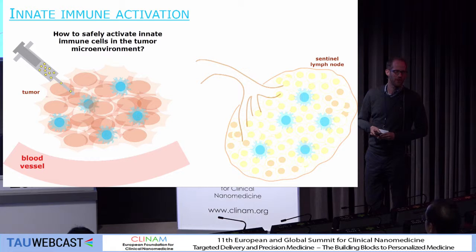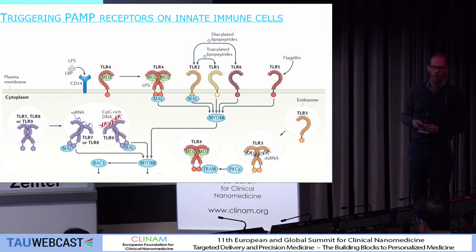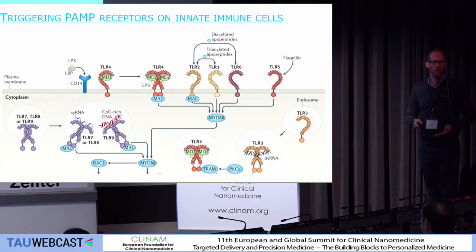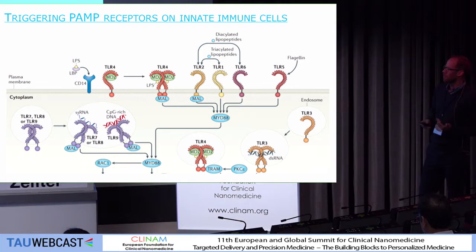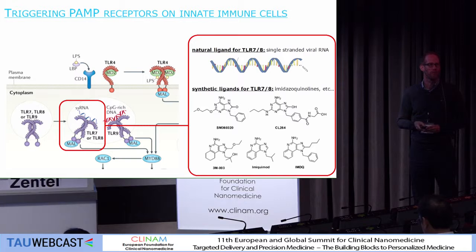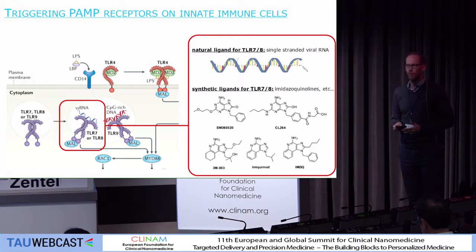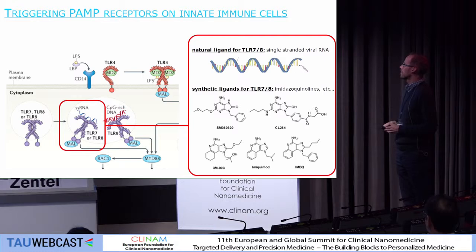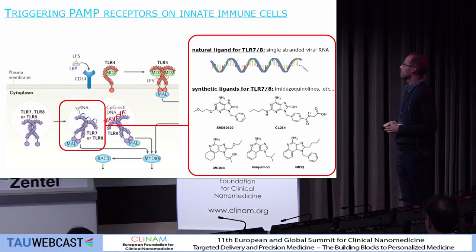Our first question was: how can we safely activate innate immune cells in the tumor microenvironment? To activate dendritic cells, one can trigger a series of receptors. We worked on triggering a Toll-like receptor — these are receptors that are activated by microbial patterns such as viruses or bacteria. We developed an interest in Toll-like receptors 7 and 8. The natural ligand of TLR7 and 8 is viral RNA, but there are also a number of small molecules that have been discovered that are very potent activators of Toll-like receptors 7 and 8.